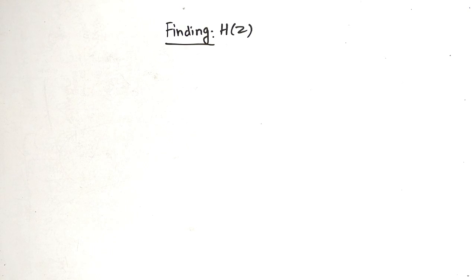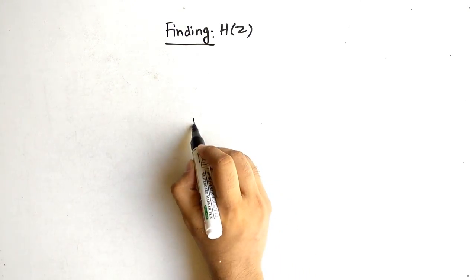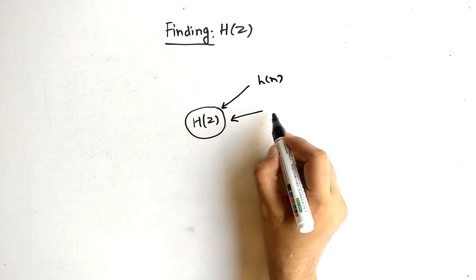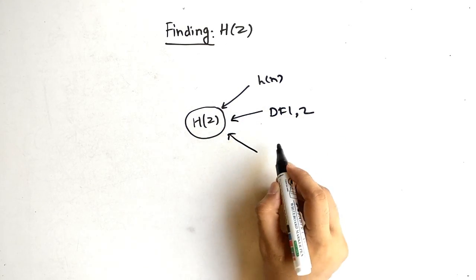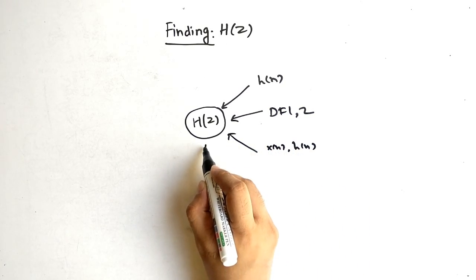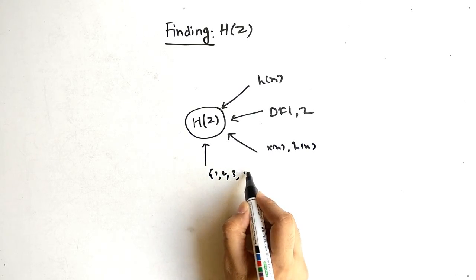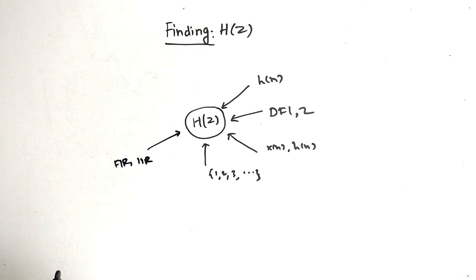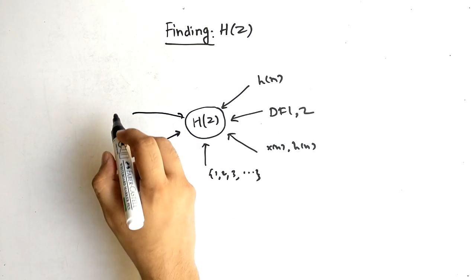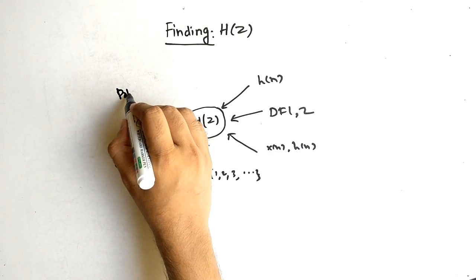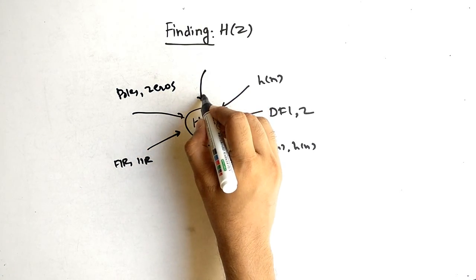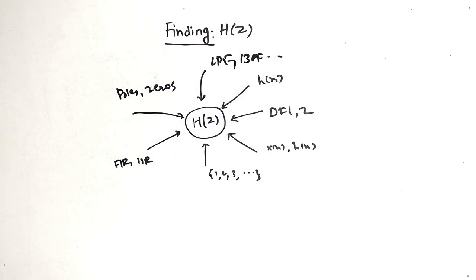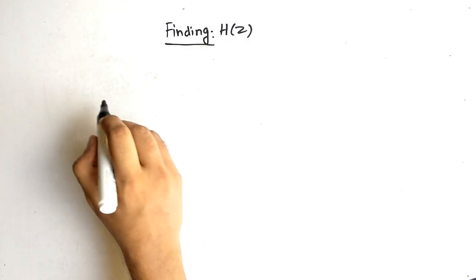Hello friends, today our topic is how to find H(z) from various types. H can be found by direct form one and two, from H(n) as an equation, from discrete values, from FIR or IIR systems to find H(n) and H(z), and also from poles and zeros. If somebody specifies a low pass filter, band pass filter, or anything, you can also find H(z) from that.